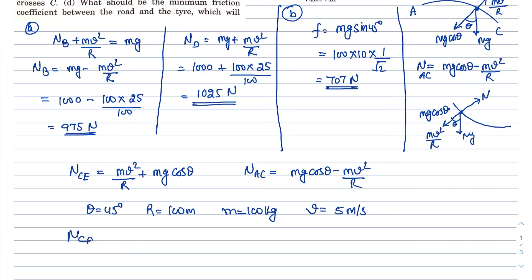Now putting all this value, NCE will become 100 into 25 upon 100 plus 100 into 10 into 1 by root 2. So that means in this case, 25 plus 707, that means 732 Newton. And for this one NAC, it is going to be M is 100 into 10 into 1 by root 2 minus 100 into 25 upon R. So that means it is going to be 682 Newton. Now this is the solution for part C.